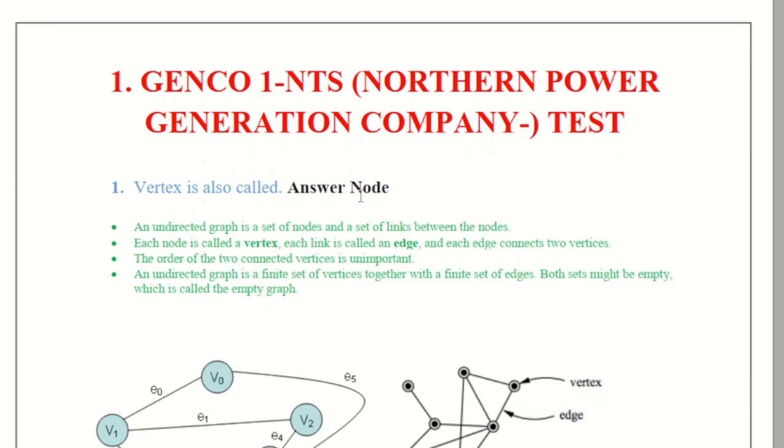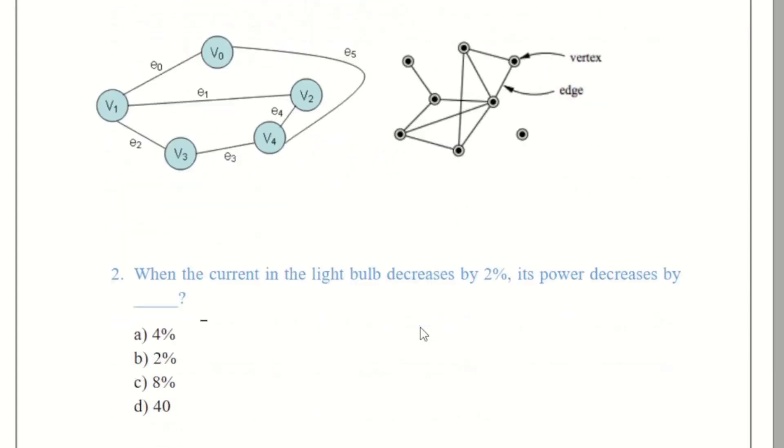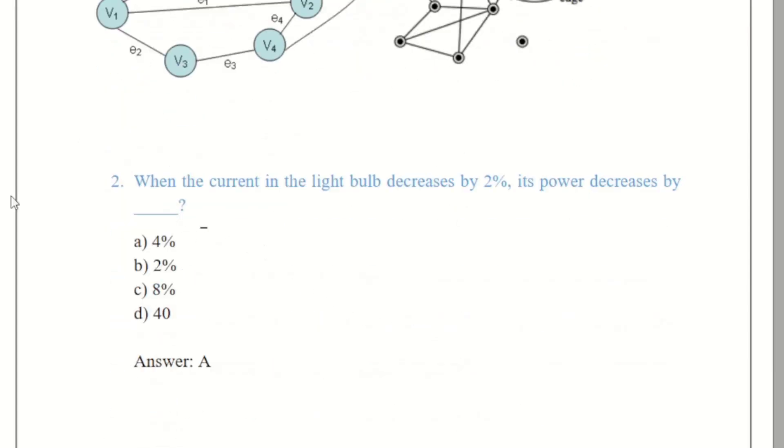So we can also say the vertexes are also the nodes. Let's come towards the question number 2 that is when the current in the light bulb decreases by 2%, its power decreases by how much? So let's discuss the formula for the power is P equals I squared R.